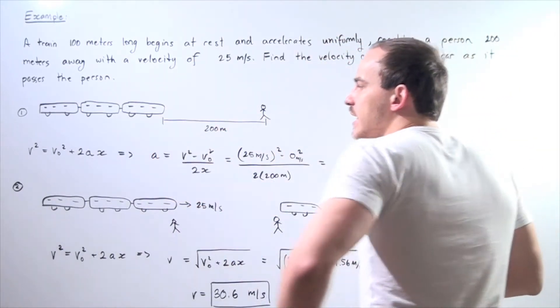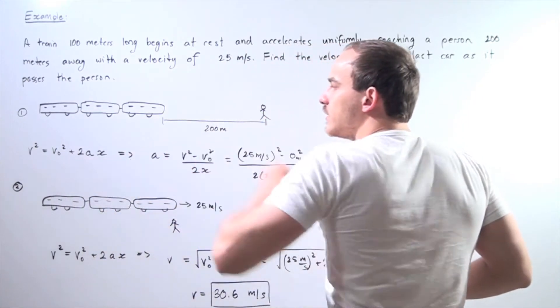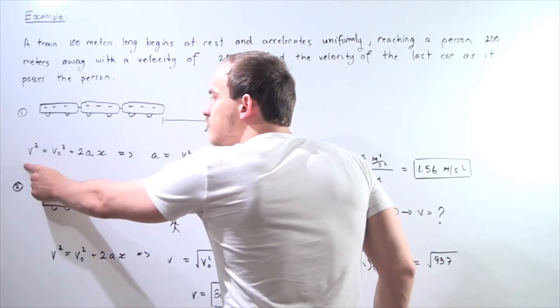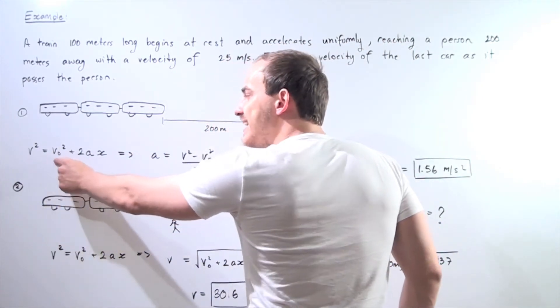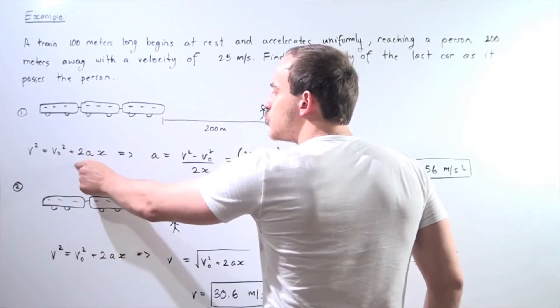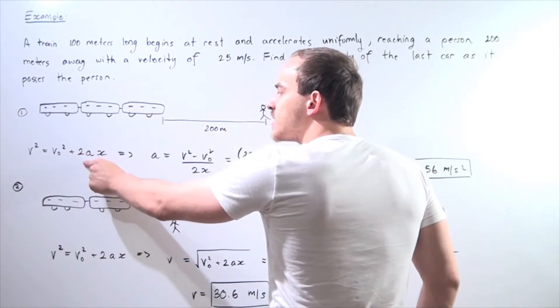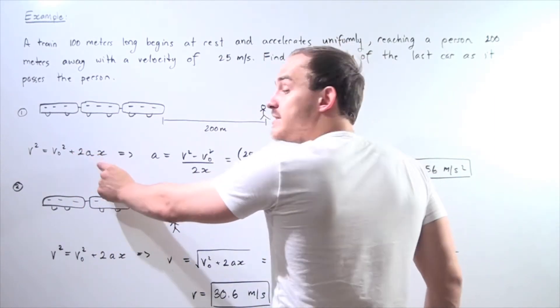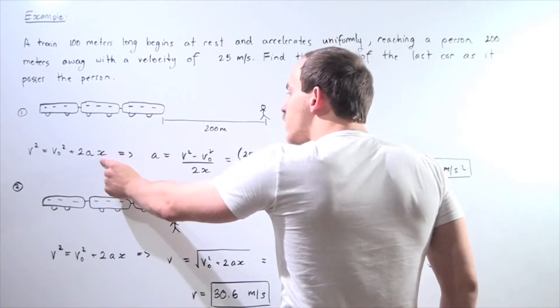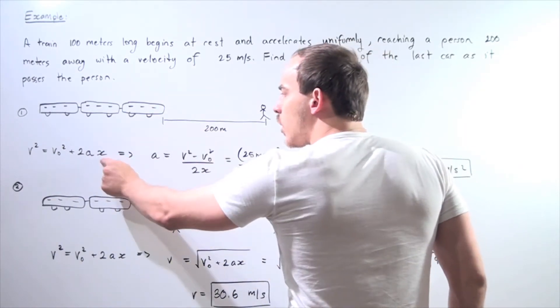So let's use the following formula. Our final velocity squared equals initial velocity squared plus 2 times our unknown acceleration times our displacement x. So we know what our displacement is. It's 200 meters.